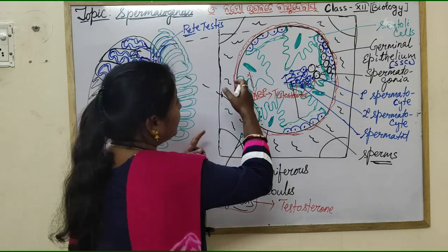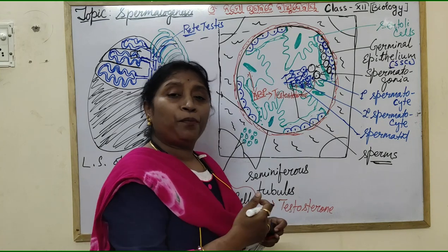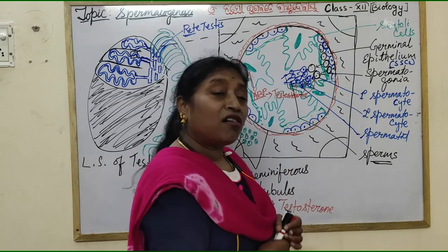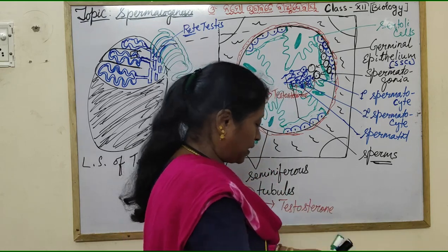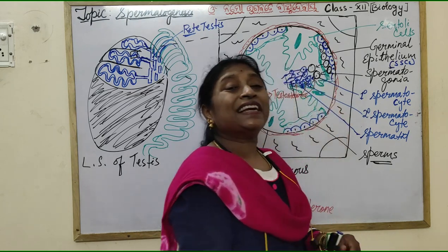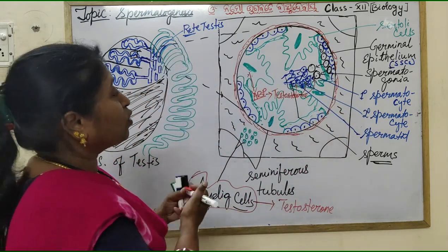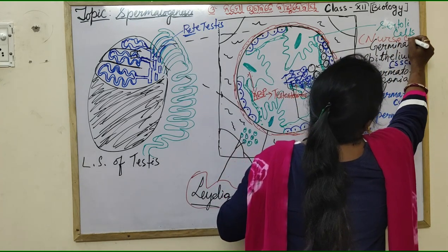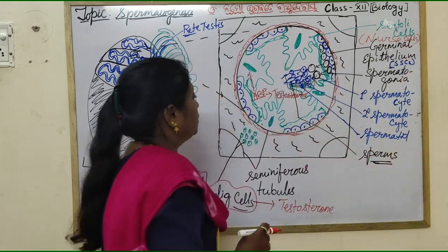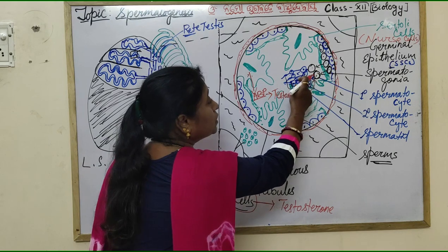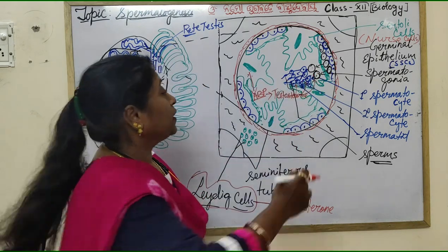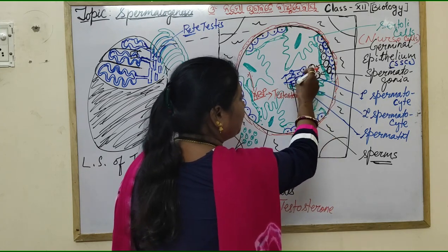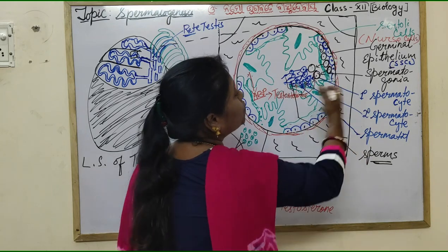The Sertoli cell also plays a very important role and is also known as the nurse cell or sustentacular cell. They are called nurse cells because they nurse the developing spermatocytes — they secrete nutrients and feed the developing sperms.